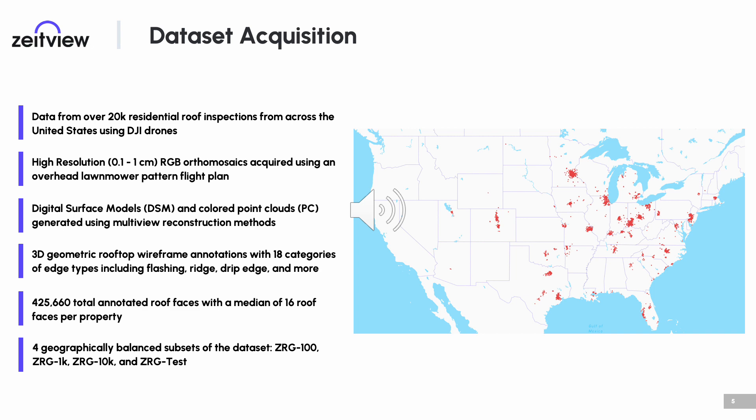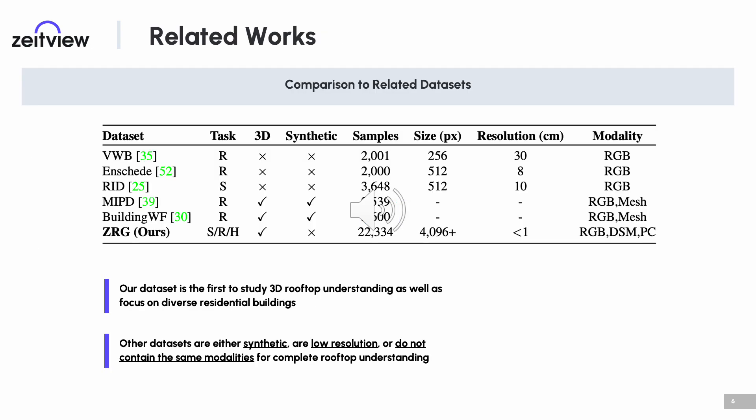It is difficult to compare to related datasets because other works either do not contain the necessary 3D modalities, like digital surface models, point clouds, and wireframe annotations, or they contain synthetically generated roof structures with low variety. Additionally, as seen in the table, other datasets generally contain low-resolution imagery and less than 5,000 samples, which is not enough for complete rooftop understanding.